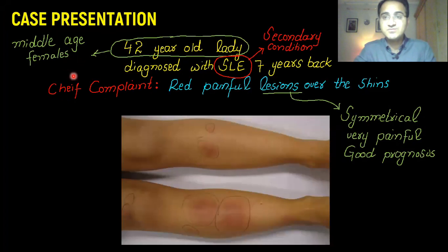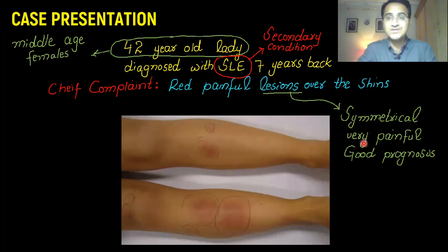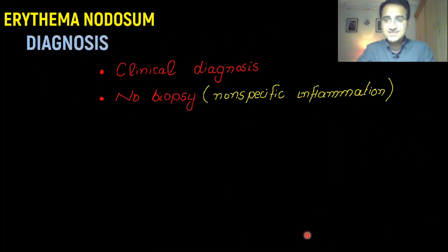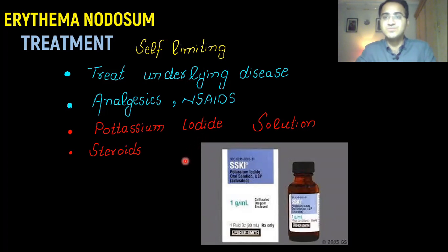In summary: erythema nodosum is mainly present in middle-aged females, in whom autoimmune diseases are very common. It is usually secondary to many other diseases, so look for the underlying cause. Lesions are usually symmetrical and painful, present on the shins. Recent strep infection is one of the most important causes. Diagnosis is clinical — no need for biopsy. Treatment: it is self-limiting, but analgesics, potassium iodide, and steroids can be used.